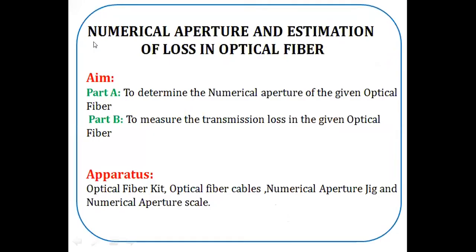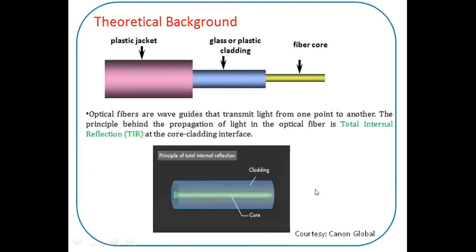The title of the experiment is: Determination of Numerical Aperture and Estimation of Loss in Optical Fiber. The experiment is classified into two parts, Part A and Part B. The aim of Part A is to determine the numerical aperture of the given optical fiber. For Part B, to measure the transmission loss in the given optical fiber. Apparatus required: Optical Fiber Kit, Optical Fiber Cable, Numerical Aperture Jig, and Numerical Aperture Scale.